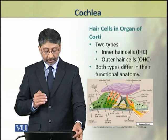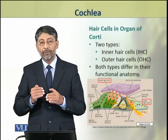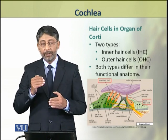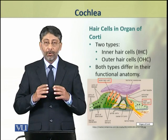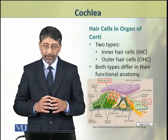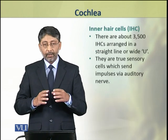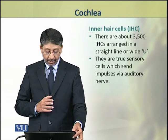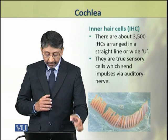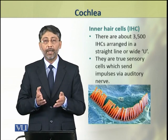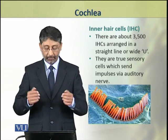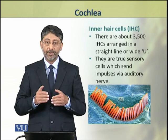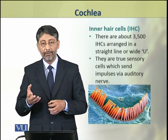There are two types of hair cells in the organ of Corti: outer and inner hair cells. Both types differ in their functional anatomy. The inner hair cells are about 3,500 in number and are arranged in a straight line or a wide U shape. These inner hair cells are the true sensory cells which send impulses through the auditory nerve.